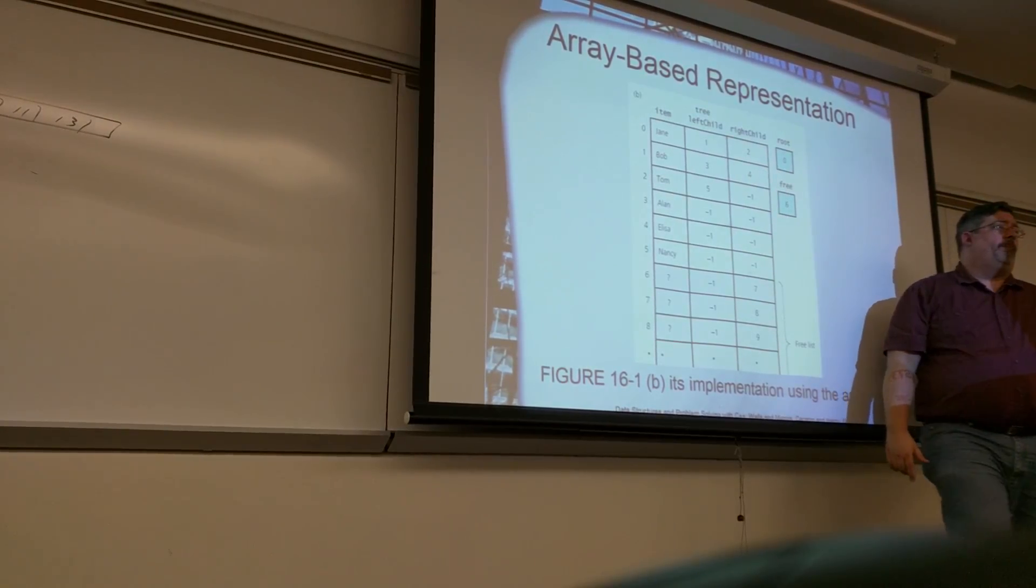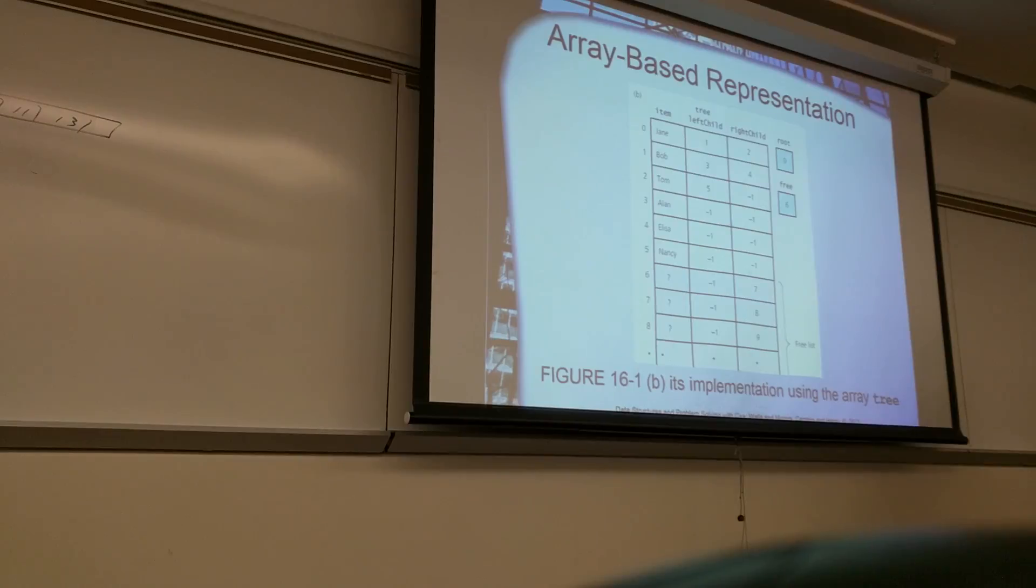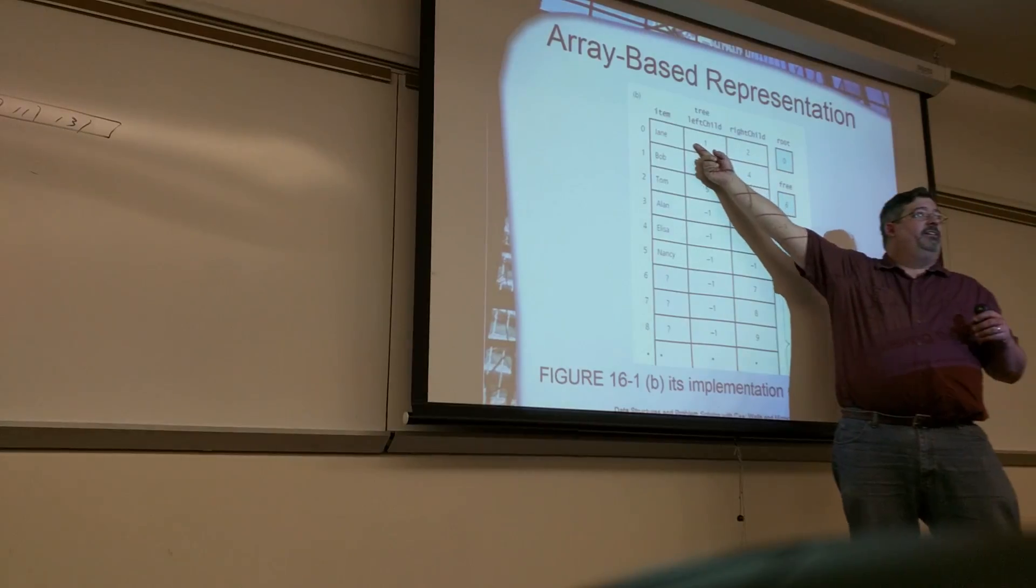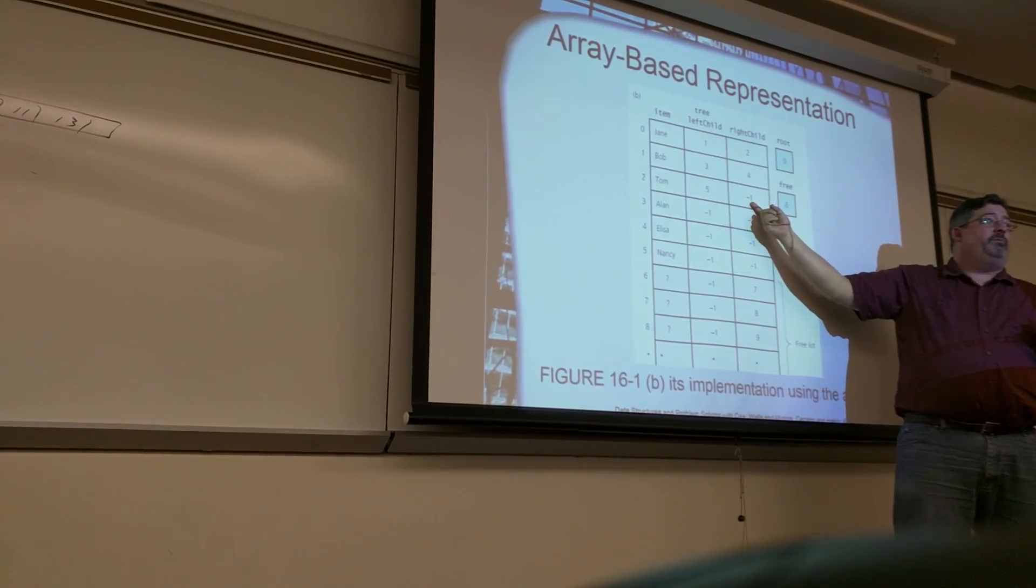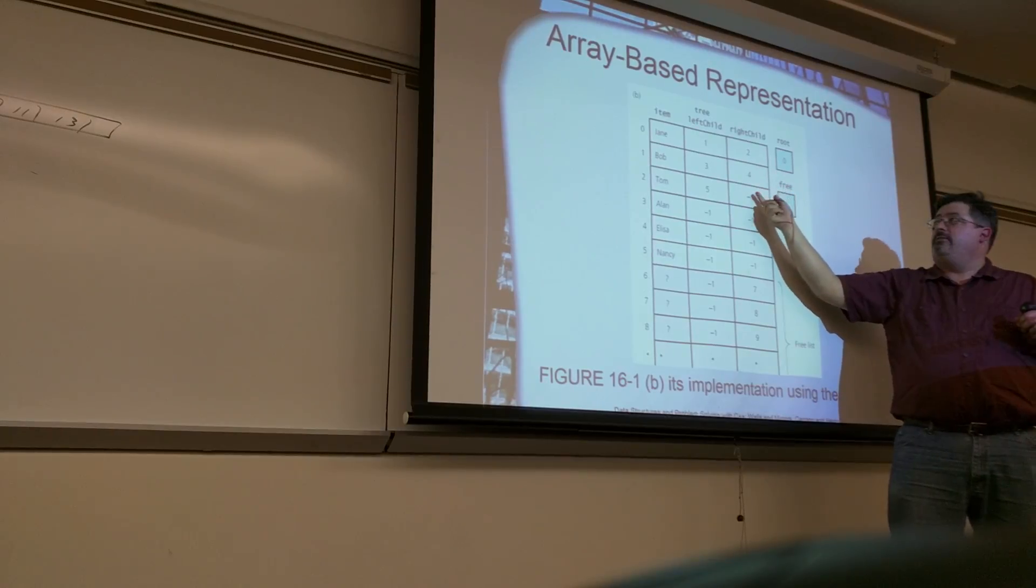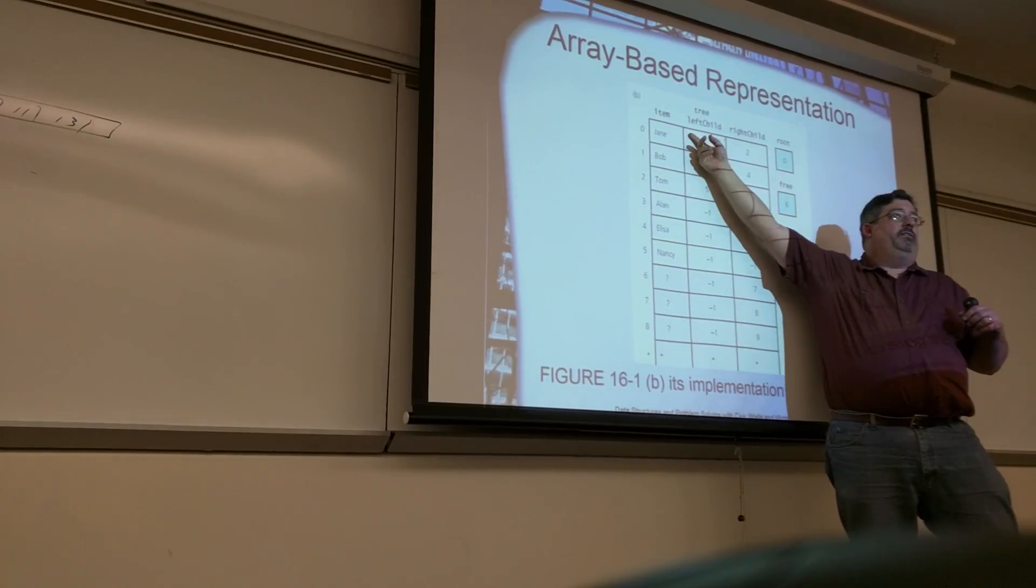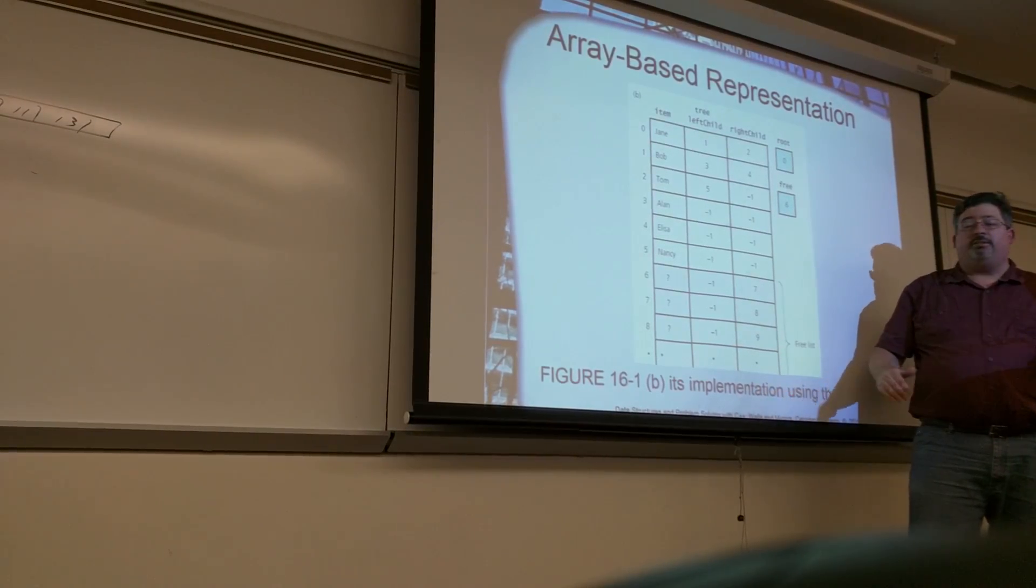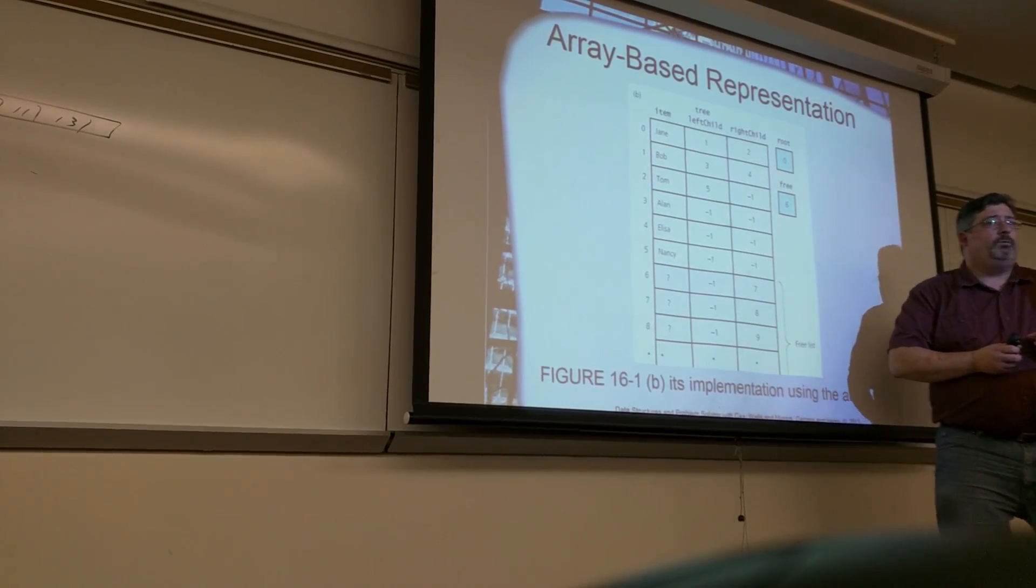I was just going to have a question about why those were negative one. Was it because of the n minus one? Nope. Negative one means there's no child. Okay. Zero is an actual value. Yeah, zero is the root. So if I put zero here, that would mean, well, in this case, zero is actually another node. So if I had zeros here, that would mean I was pointing back to that. So minus one is the default, which means, right, I forgot about this, the free list.